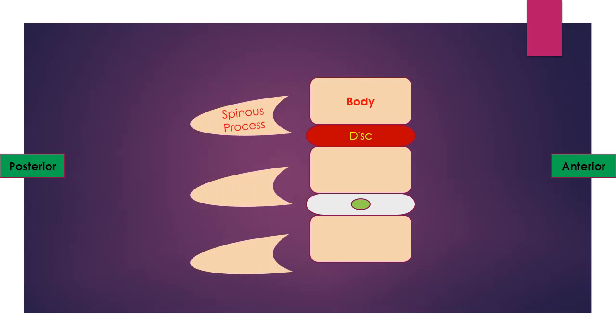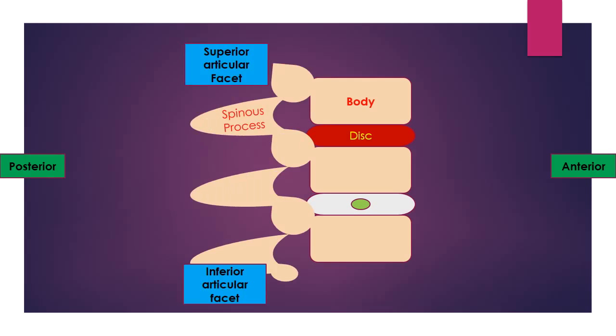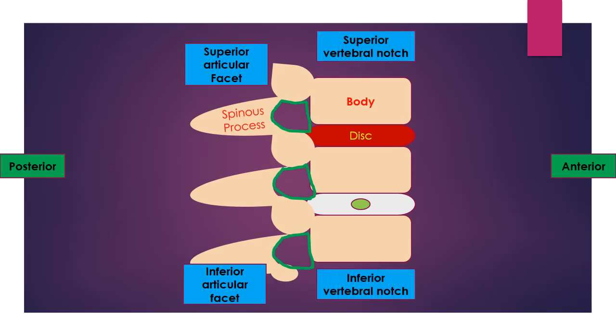The spinous processes are located posteriorly. The superior articular facets articulate with inferior articular facets to form the facet joints. The superior vertebral notch and inferior vertebral notch form the intervertebral foramen through which respective spinal root passes out.